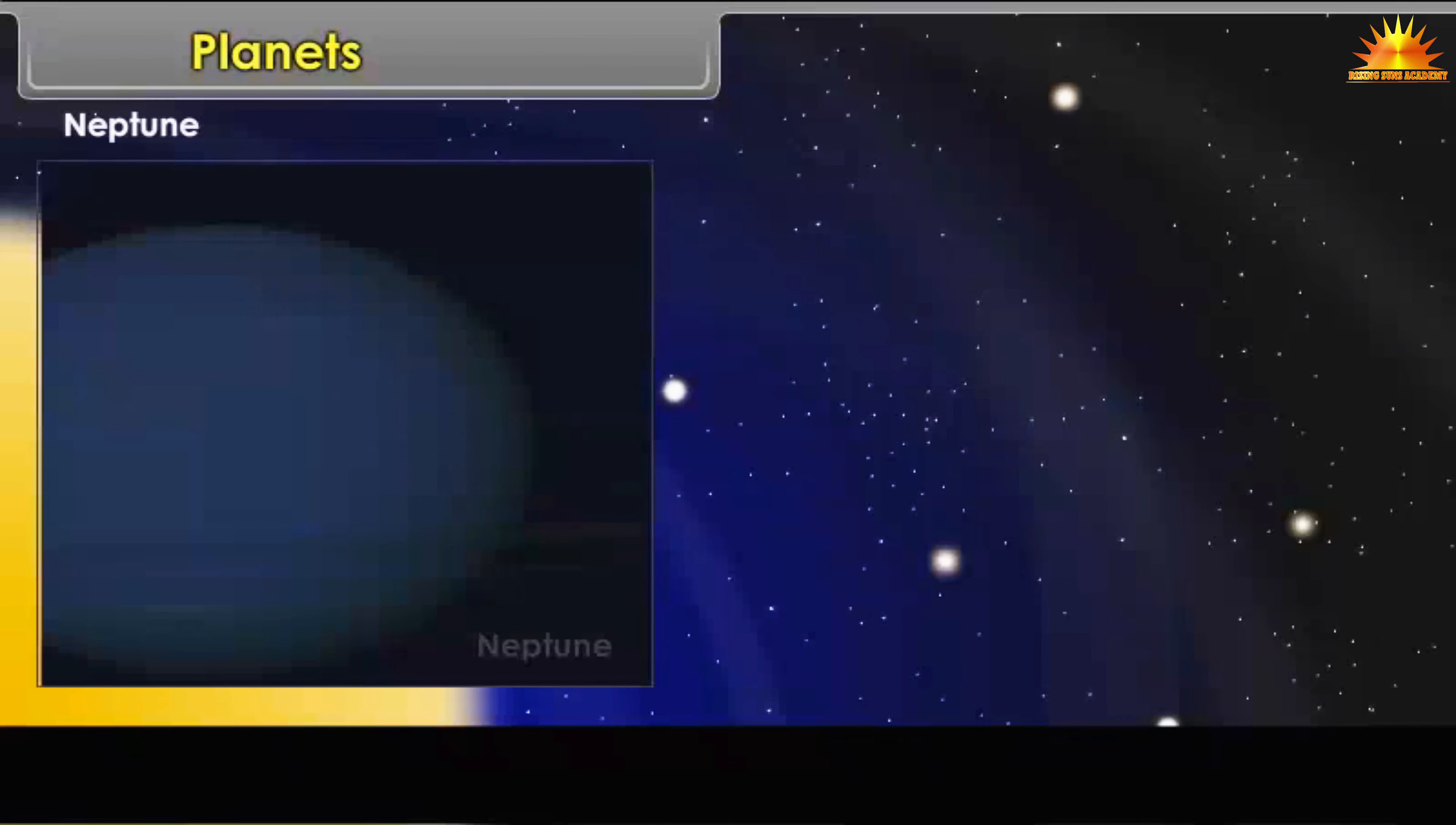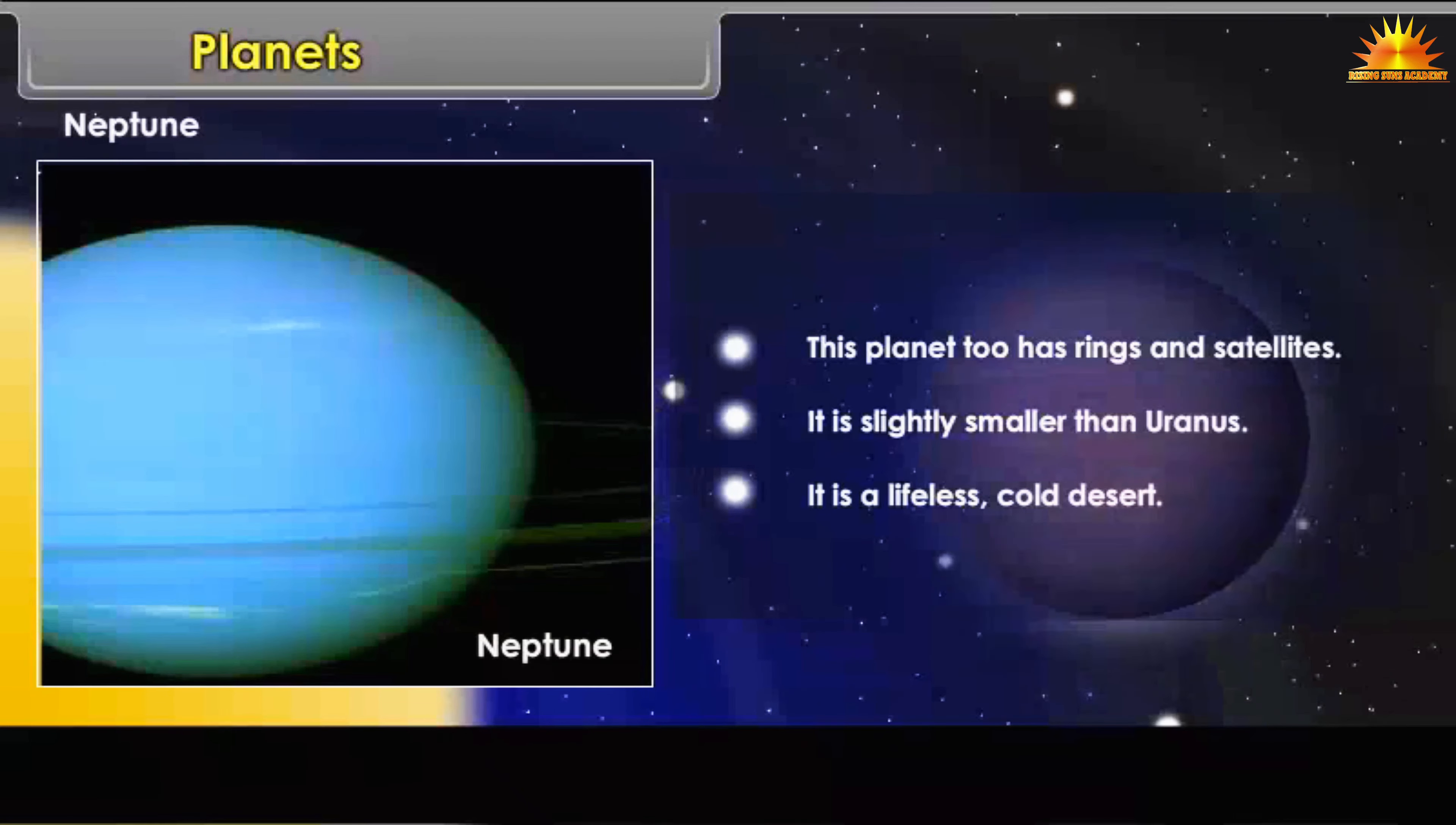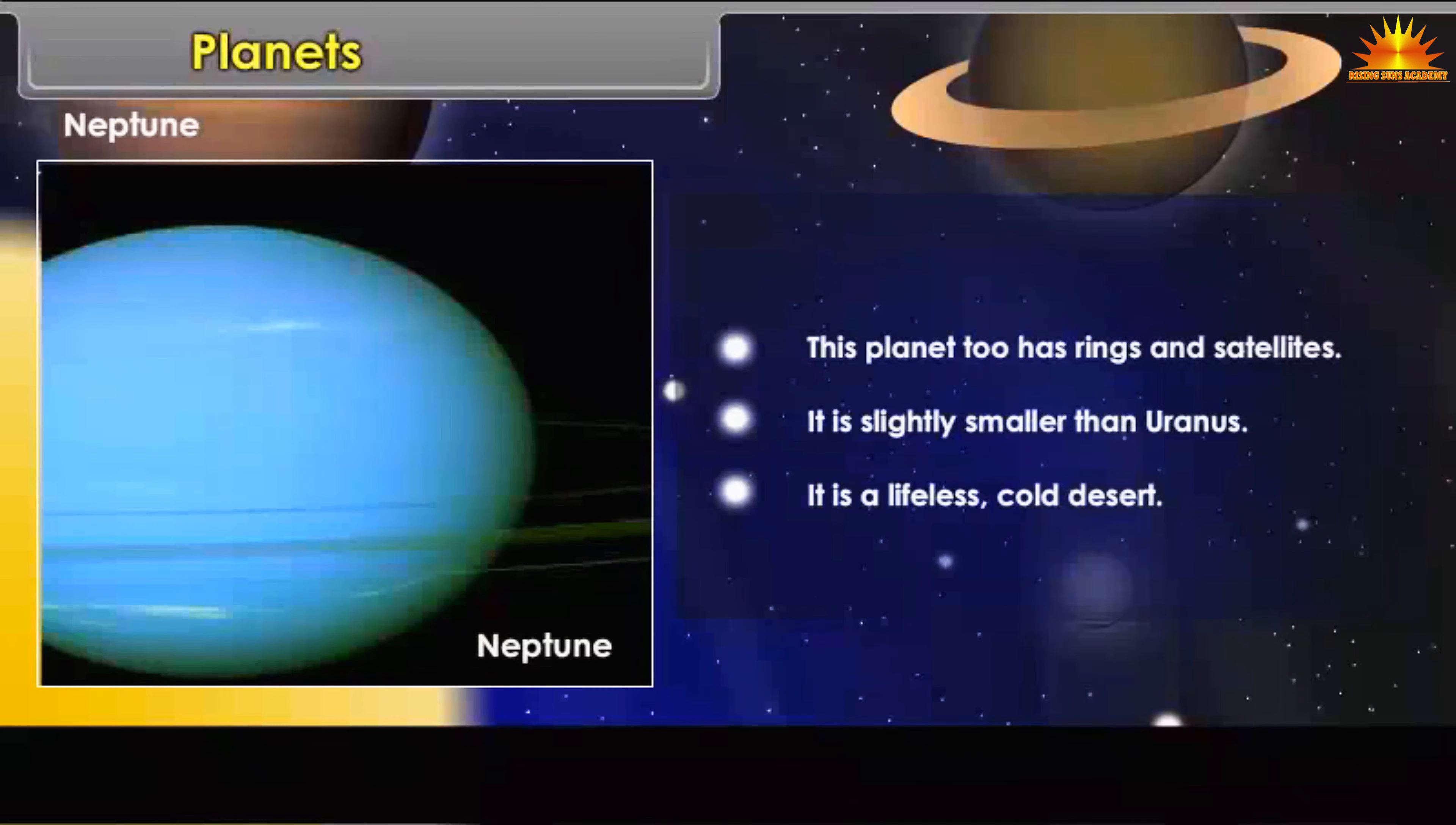Neptune: This planet too has rings and satellites. It is slightly smaller than Uranus. It is a lifeless, cold desert.